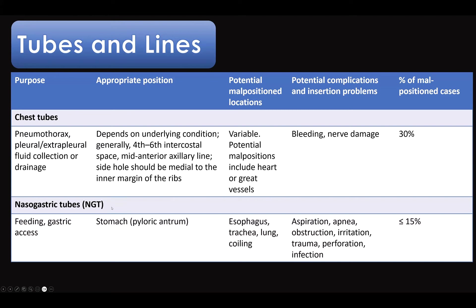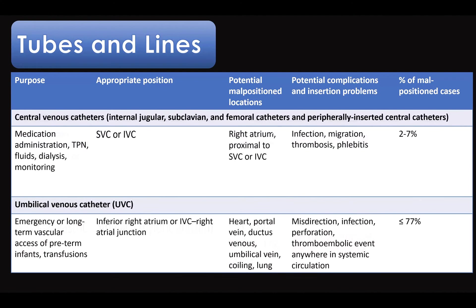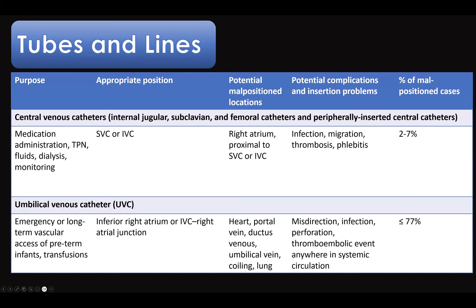For feeding tubes like nasogastric tubes, the correct position is in the stomach. Malpositioned locations include the esophagus, trachea, or lung, or coiling in the esophagus. Complications include aspiration, apnea, obstruction, irritation, trauma, perforation, and infection. For central venous lines — including internal jugular, subclavian, femoral, and peripherally inserted (PICC) lines — the normal position is the superior or inferior vena cava at the junction with the right atrium. Complications include infection, migration, thrombosis, and phlebitis.